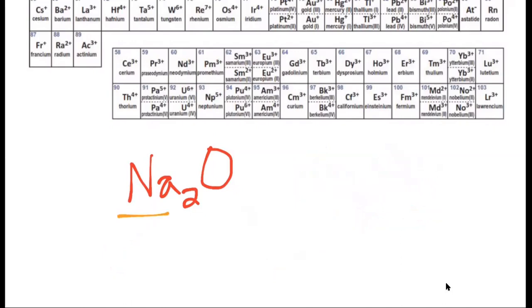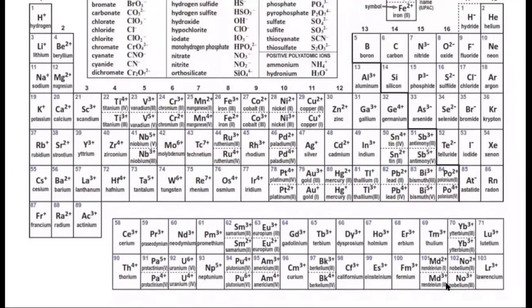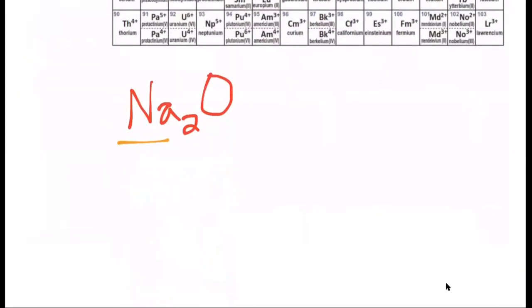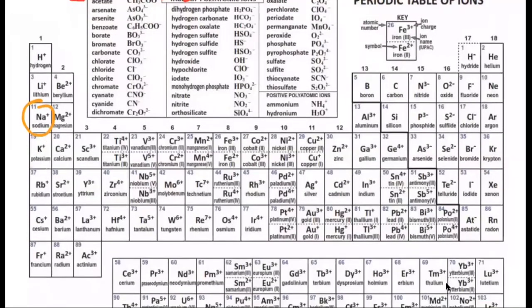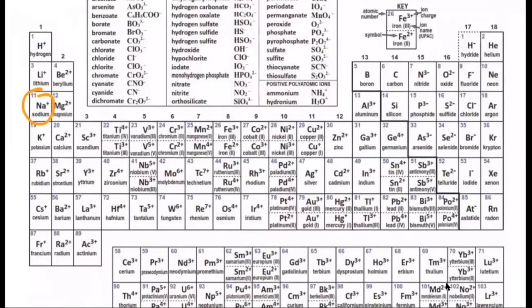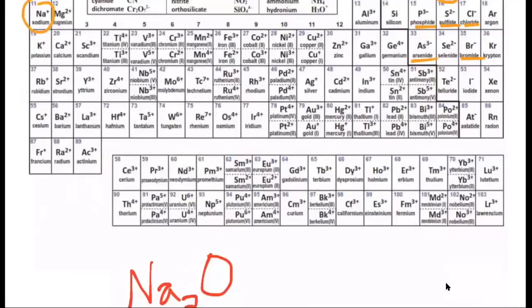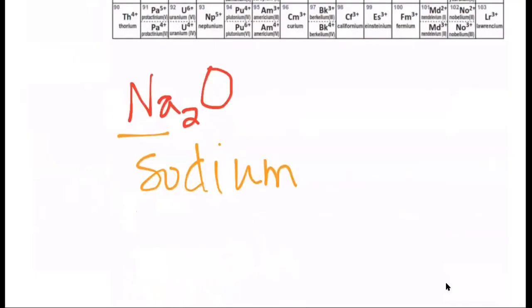For Na₂O: Na is sodium (plus one charge). O is oxygen, and since it's the negatively charged ion of oxygen, it's oxide. So Na₂O is simply sodium oxide — a binary ionic compound with no transition metal and no polyatomic ion involved, so no Roman numeral needed.